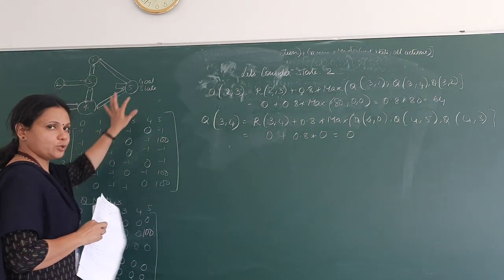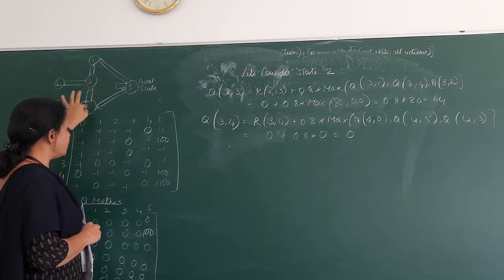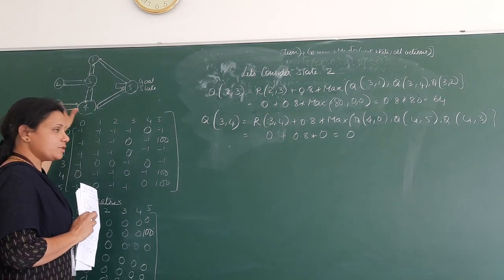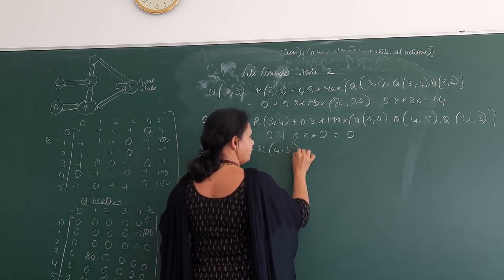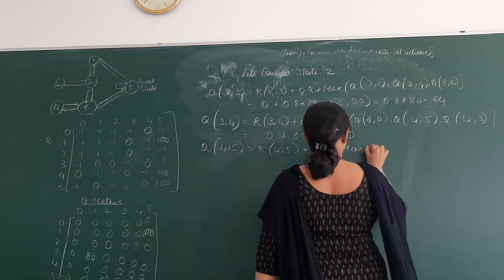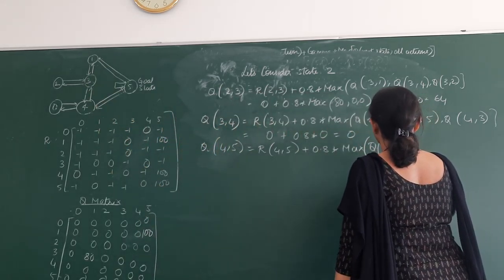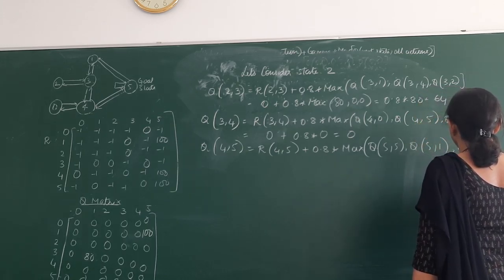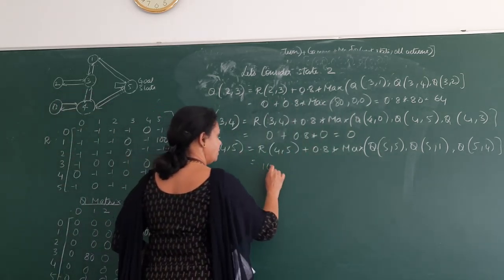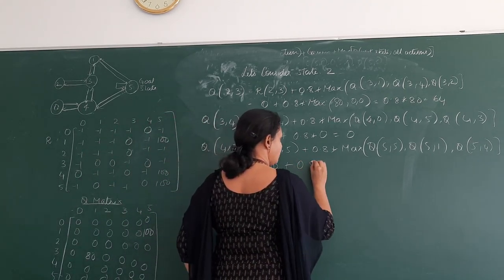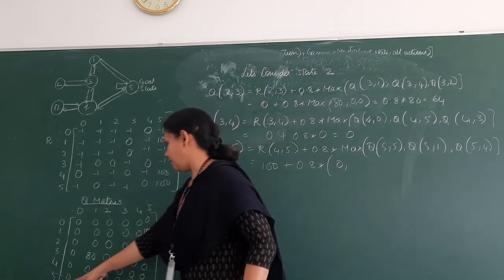Still I have not reached the goal state. From state 4 I can go to state 0 or state 5. I won't go back. So we will move to state 5. Q(4,5) equals R(4,5) plus 0.8 times max of Q from state 5. From 5 I can go to 4, to itself, or to 1. R(4,5) is 100. Plus 0.8 times max of Q(5,5)=0, Q(5,1)=0, Q(5,4)=0. Everything in state 5 is 0. So Q(4,5) = 100 + 0.8 times 0 = 100.